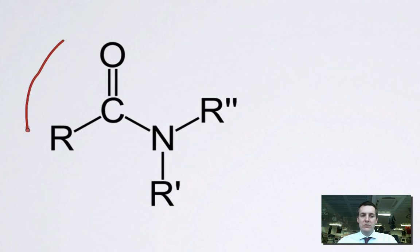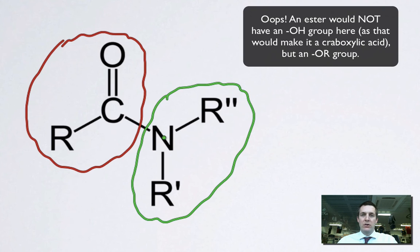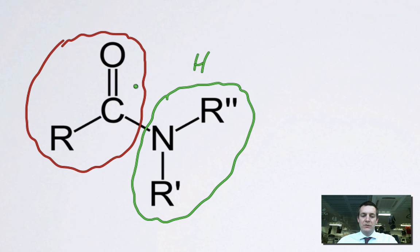So just as when we had an ester, we thought to ourselves, well, this bit looks a little bit like a carboxylic acid that's lost its OH group. And if this was an ester, this was an OH group over here and it looked a bit like an alcohol that lost its hydrogen. Well, if we put back a hydrogen here and if we reinserted an OH into this part, then again, we'd see we'd have a carboxylic acid and here we'd have an amine.